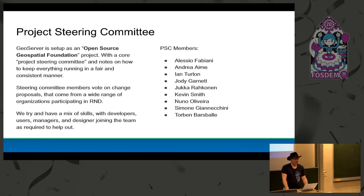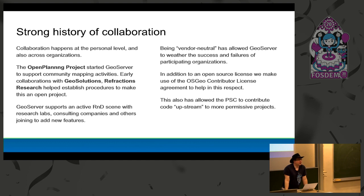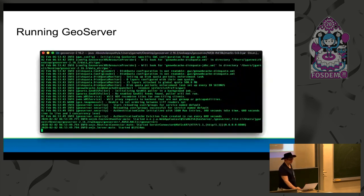To wrap up, we've got a project steering committee and we're part of the OSGEO Foundation, which has reviewed our processes — we try to keep things open and fair. We have a strong history of collaboration; this project has seen many entire companies come and go since it was started by the Open Planning Project around 2002, with an initial core team including Open Planning Project, Geo Solutions, and Refractions Research. To try it out: there's a binary, there's a web archive, no Windows or Mac installers right now as our build server had some vandalism last year. There's no official Docker image but many exist, and a few companies offer hosting.